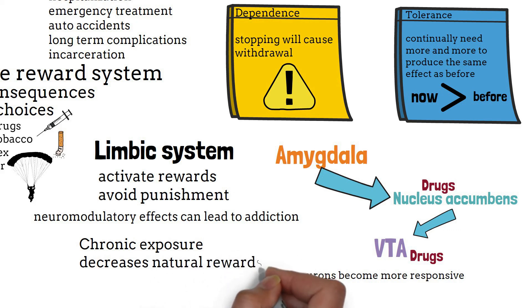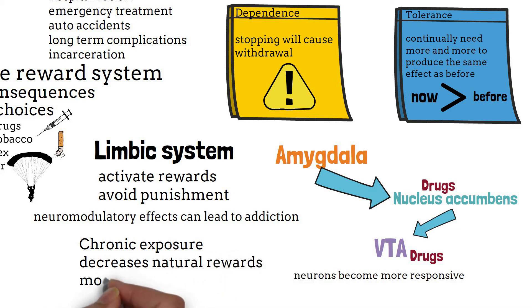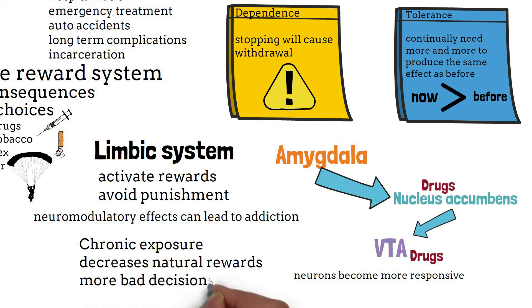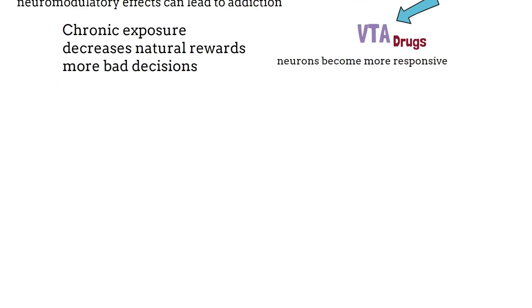This can lead to a decrease in the influence of the decision-making processes, risk assessment, consequences, and social appropriateness. While the brain disease concept of drug addiction is not well worked out, research is still strong in this field. This ends the video on addiction.